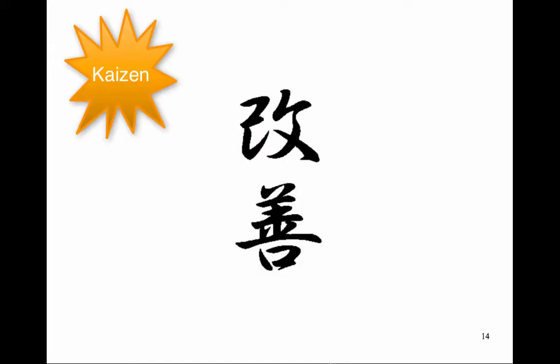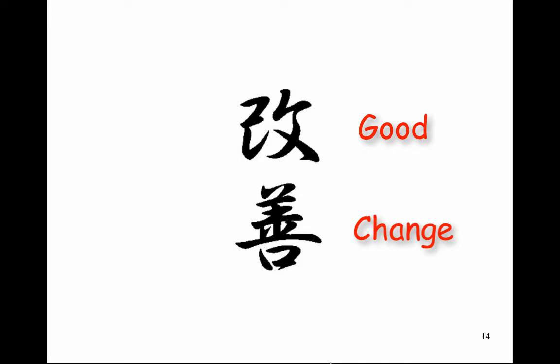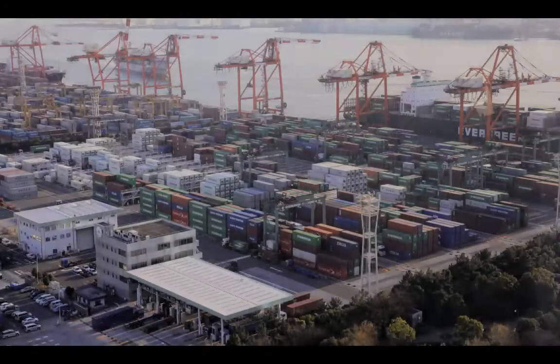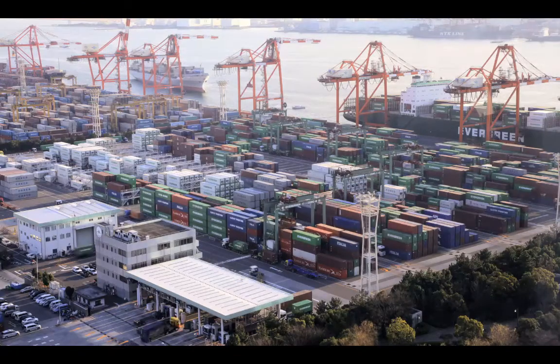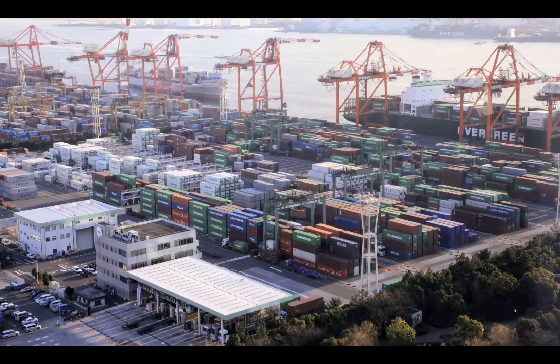Kaizen is a key principle in Lean that promotes rapid and iterative improvement. It translates to 'good change,' also referred to as continuous improvement. Kaizen is a short, intensive improvement project or event, typically lasting 60 to 90 days. In order to identify Kaizens, we need to better understand the supply chain.